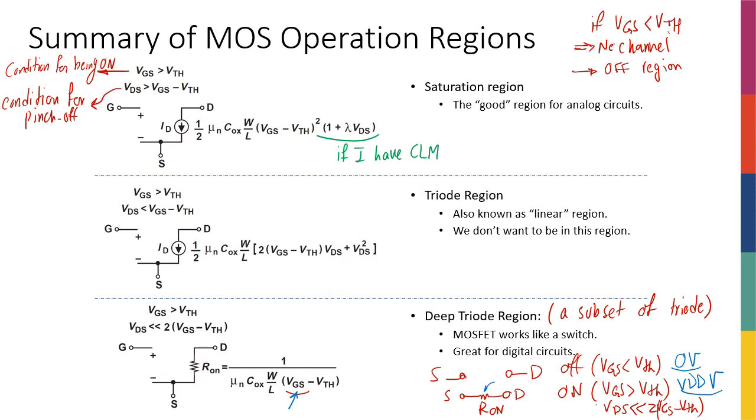So just to remind you, this was VDS and this was ID, and we had a curve like this. Basically this was triode, this was deep triode, and then this was saturation. You can see that when we're in deep triode we are pretty much linear, and you can see that deep triode is a subset of the triode region.